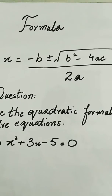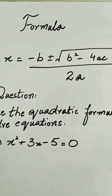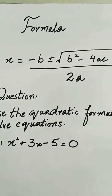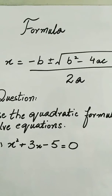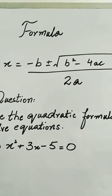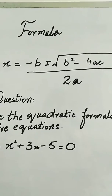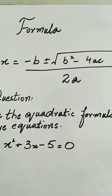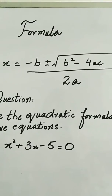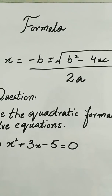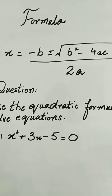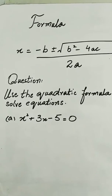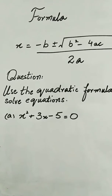Hello and welcome. In this lesson, the formula for quadratic equation is used to solve different questions. The formula is x equals minus b plus minus under root b squared minus 4ac over 2a, where a is the value of the coefficient with x squared, b is the value of coefficient with x, and c is the value of the constant. Now look at the question where we have to use the quadratic formula to solve the equations.